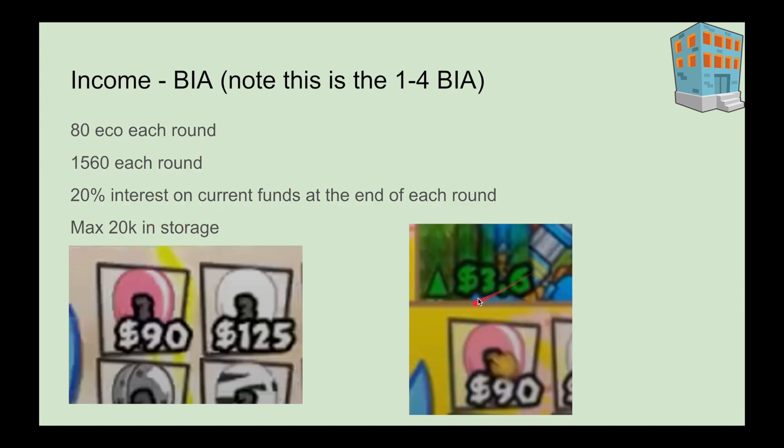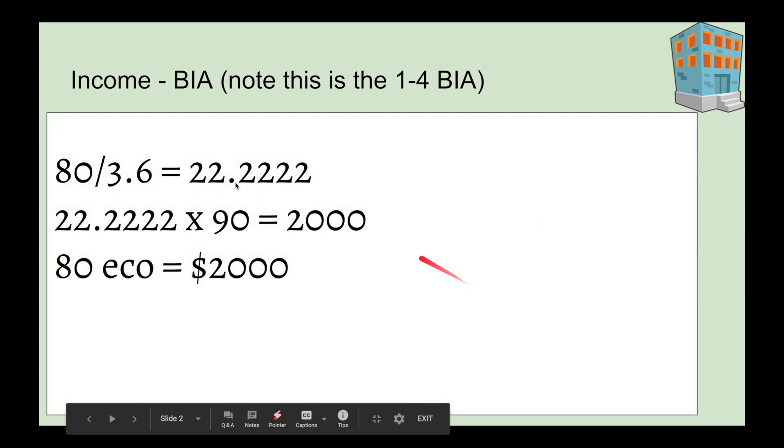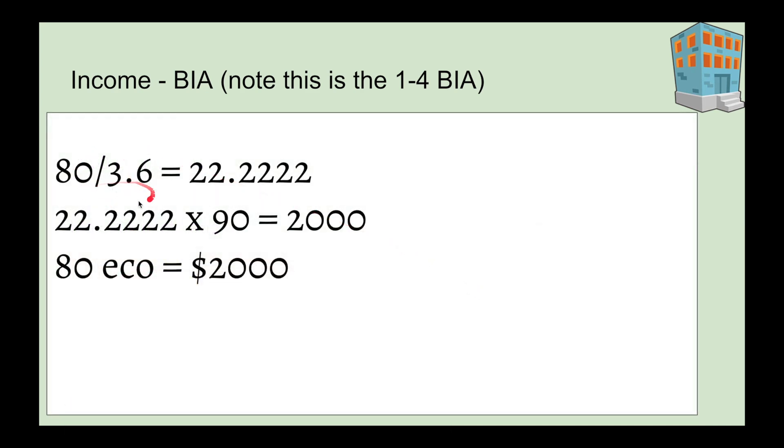Every time you send a set of pink balloons, you get 3.6 eco. Each set of pink balloons costs $90 to send. If we look here, you'd have to send 22.2 sets times $90 each, which is $2000. So it's really giving you $2000 worth of eco every single round, which is really good.